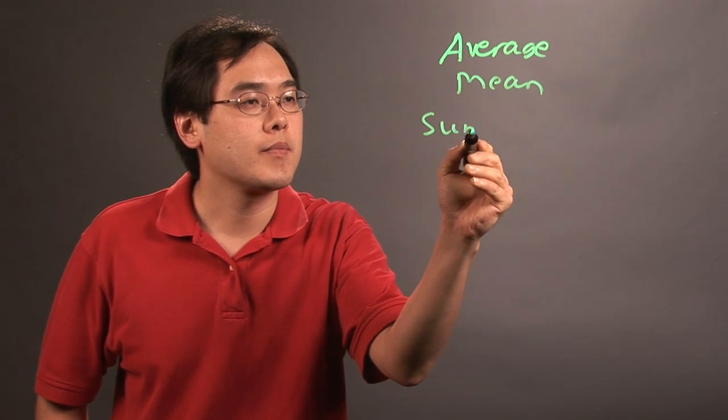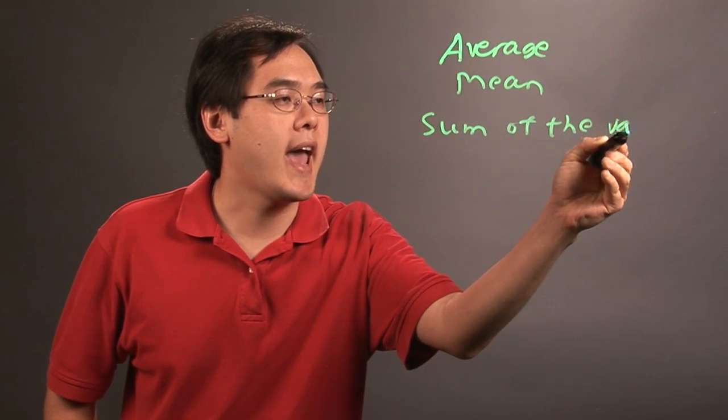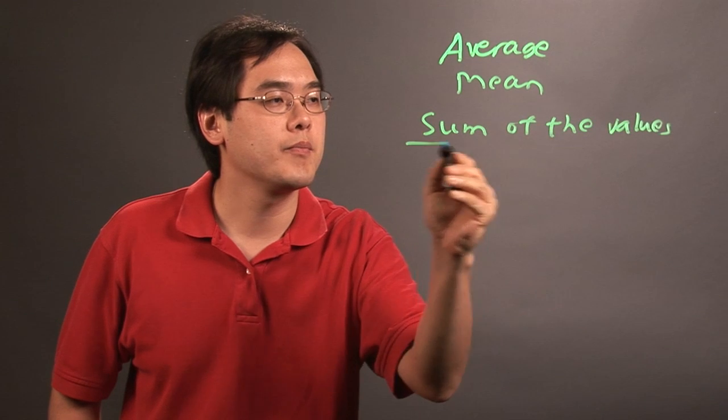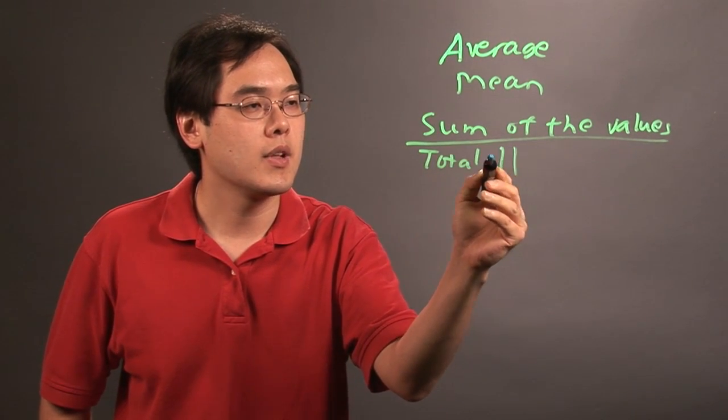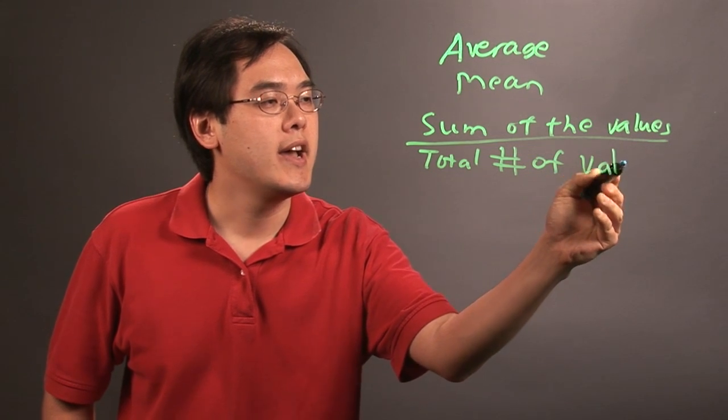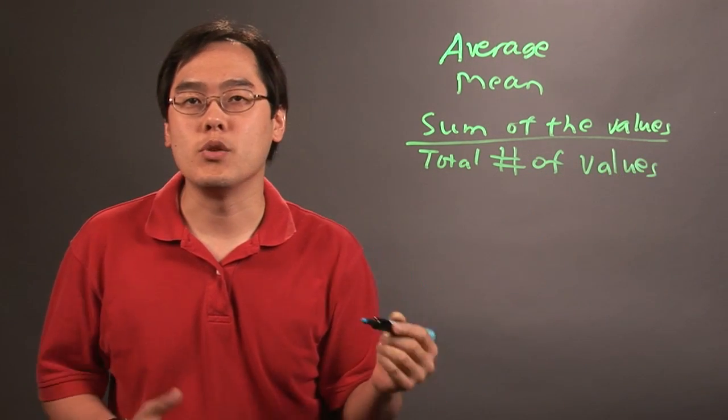It's basically the sum of the values. In other words, you want to add all the numbers that you have together, and then you want to divide by the total number of values. In other words, you want to divide it by how many total numbers that you see.